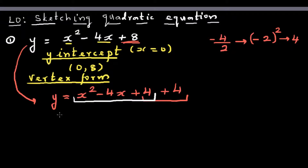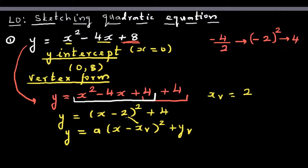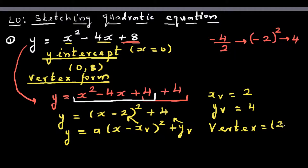So we can write y is equal to x minus 2, the whole squared, plus 4. This is the vertex form. The general formula is y equals a times x minus xv, the whole squared, plus yv. Comparing, the x-coordinate of the vertex, xv, is 2 and yv is 4. So the vertex is 2 comma 4.